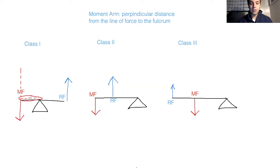If I were to do the same thing for the resistive force, it'll look like this. So this dotted line here, that is going to represent the moment arm of the resistive force. So here we have the moment arm of the muscle force. This is the moment arm of the resistive.